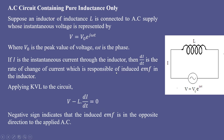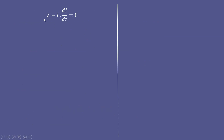The induced voltage in the inductor is −L·(di/dt). Applying KVL to the circuit: v − L·(di/dt) = 0, where L·(di/dt) represents the induced voltage. The negative sign indicates the induced EMF opposes the applied AC. Substituting for v, we get: v₀ e^(jωt) − L·(di/dt) = 0. Our aim is to find the expression for current i by solving this differential equation.